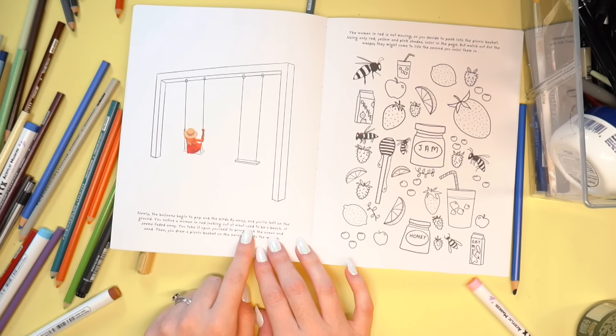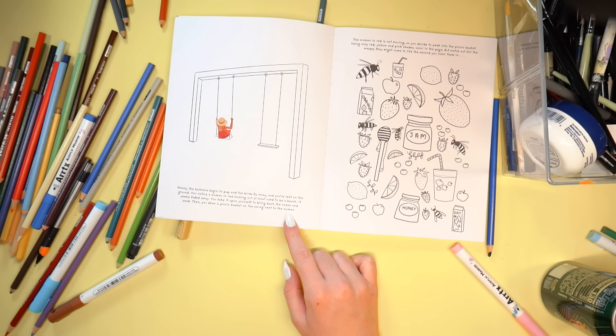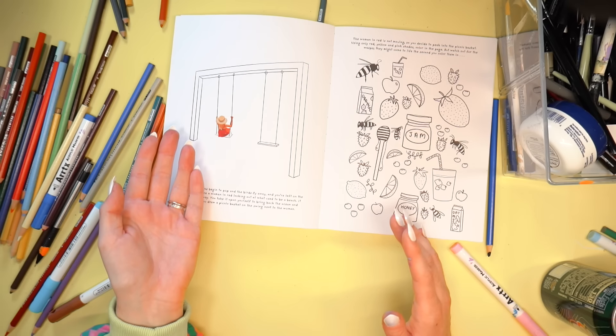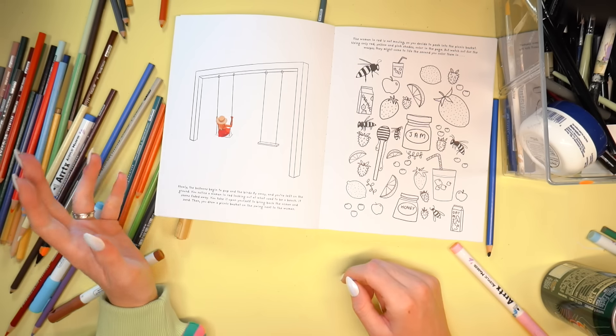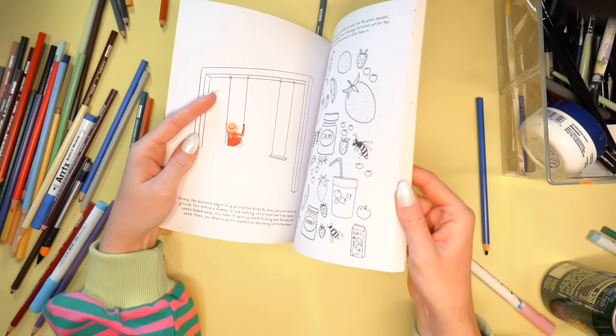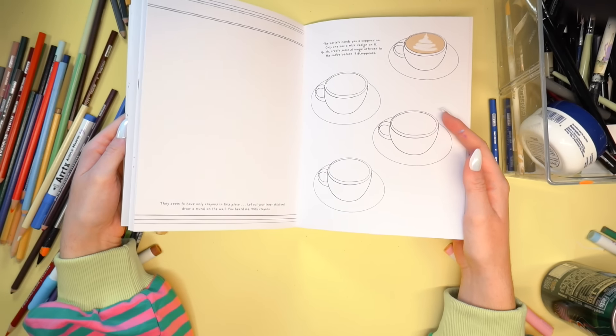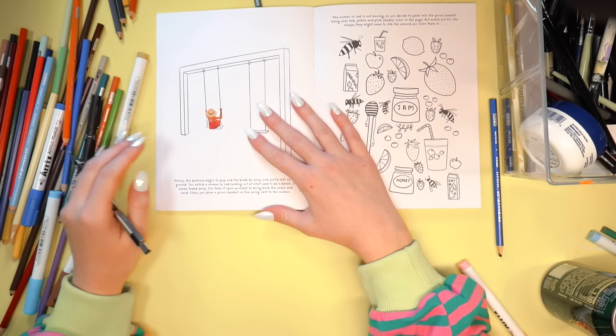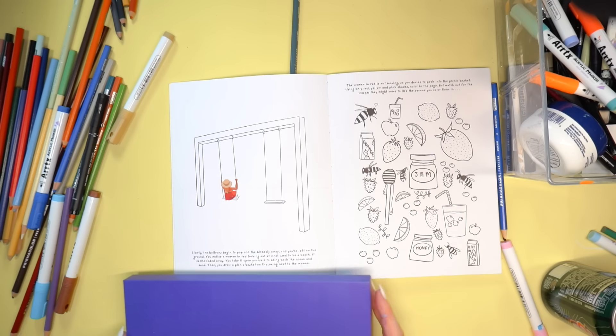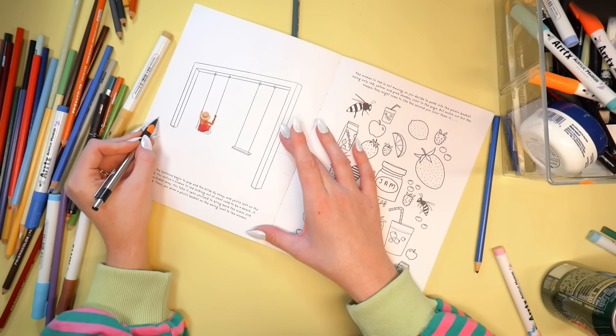Next up, I'm going to do these two pages and then I'll leave it at that today and I'll make this whole video a series so that if you want to see me complete the entire book, I'll complete like four to six pages every single time. Slowly the balloons begin to pop and the birds fly away. You're left on the ground. You notice a woman in red looking out at what used to be a beach. It seems faded away. You take it upon yourself to bring back the ocean and sand. Then you draw a picnic basket on the swing next to the woman. Fun fact, this woman is actually me looking out at the ocean on the Bahamas.